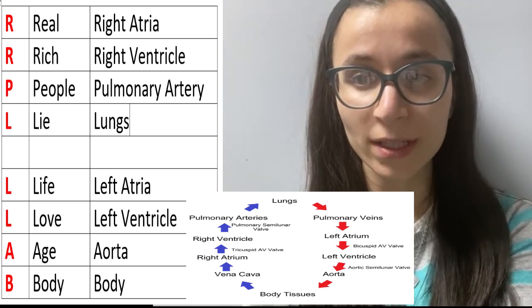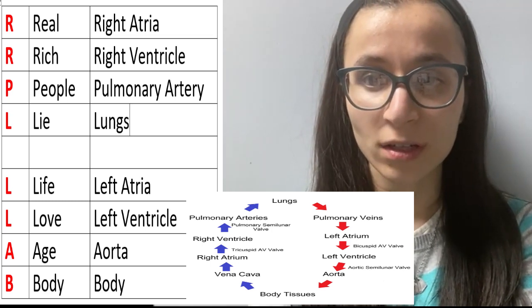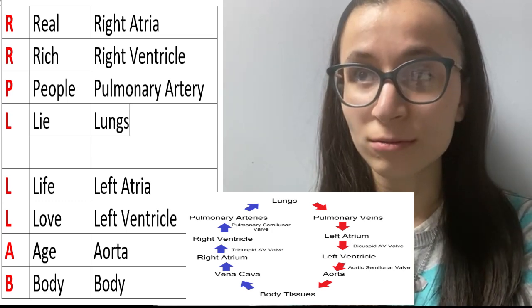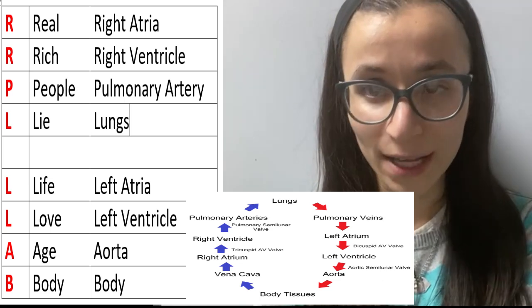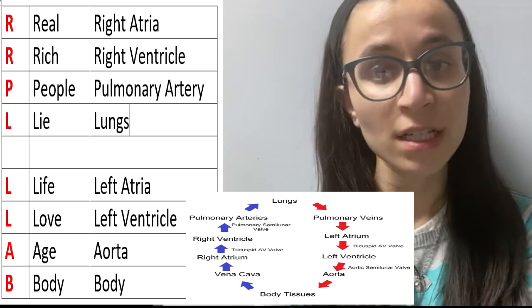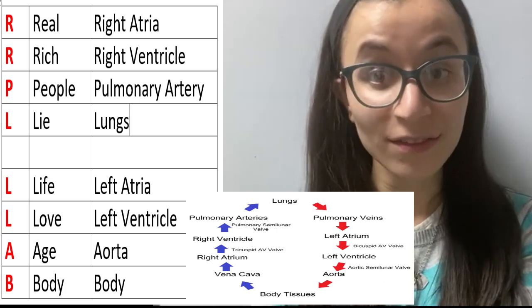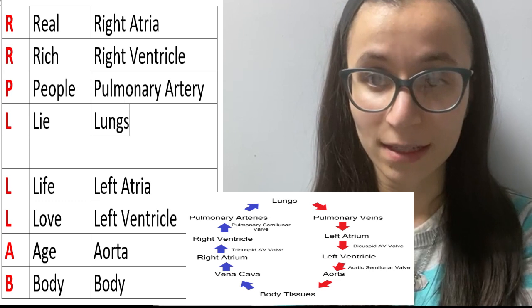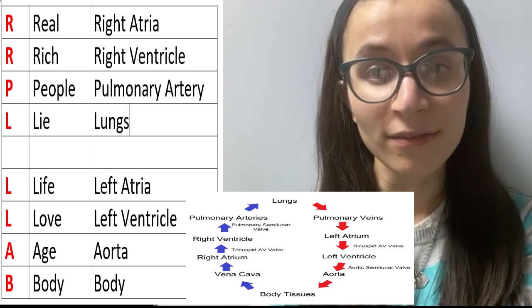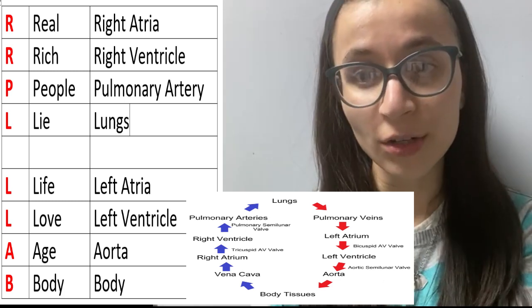So now let's go over that really quickly. Like we said before, real rich people lie. From the right atrium to the right ventricle, to the pulmonary artery, to the lungs. Then, what do they lie about? They lie about life, love, age, and body. So what is that? That's left atrium, left ventricle, aorta, and body.